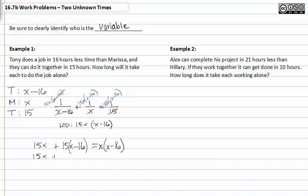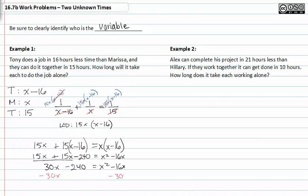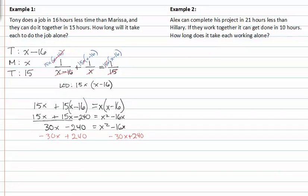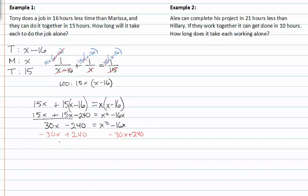From here, I distribute the factors outside the parentheses and combine like terms. Setting everything equal to zero, I subtract thirty x from both sides and add two hundred forty to both sides. This gives me my quadratic equation set equal to zero.